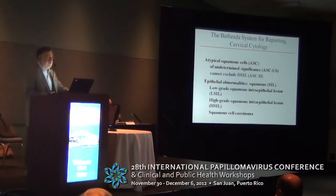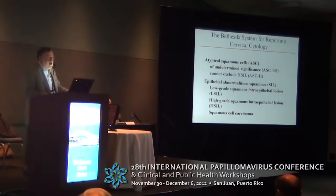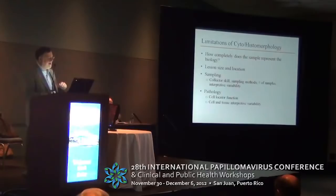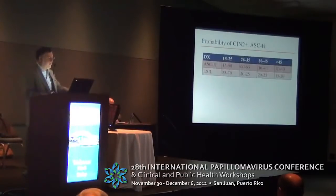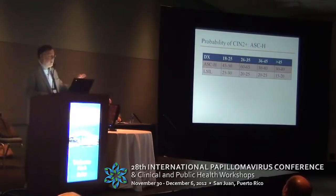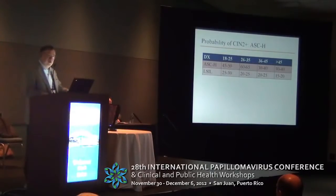ASC-H is a category in cytology where the cytopathologist is worried about a high-grade lesion, but there aren't enough cells or the cells aren't large enough to make the call definitively. Another pathologist might call it immature metaplasia — again, trading off sensitivity and specificity. You can see that ASC-H cytology is a much riskier situation: this equivocally abnormal cytology where we're worried about high-grade is actually much better at predicting the prevalence of high-grade, approaching in some populations the same risk as HSIL cytology.